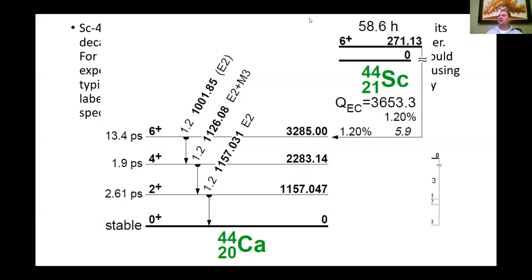This level diagram is relatively uncomplicated. What we have here is the half-life of this metastable state, the 58.6 hours. We have the spin and parity of this particular isomer.